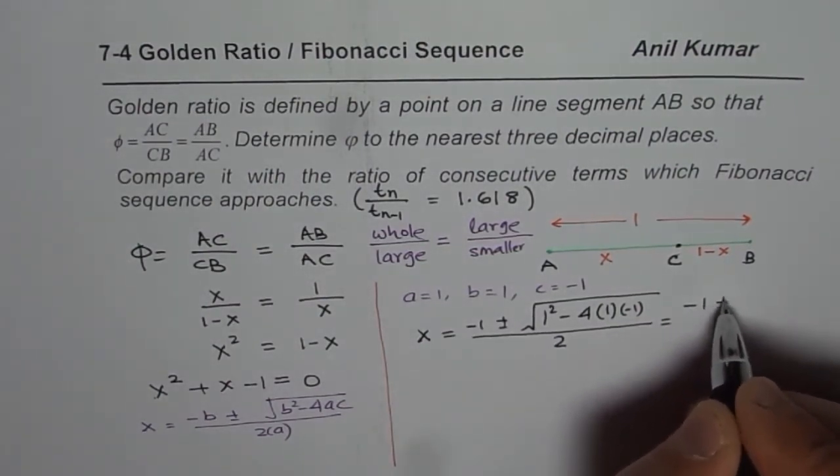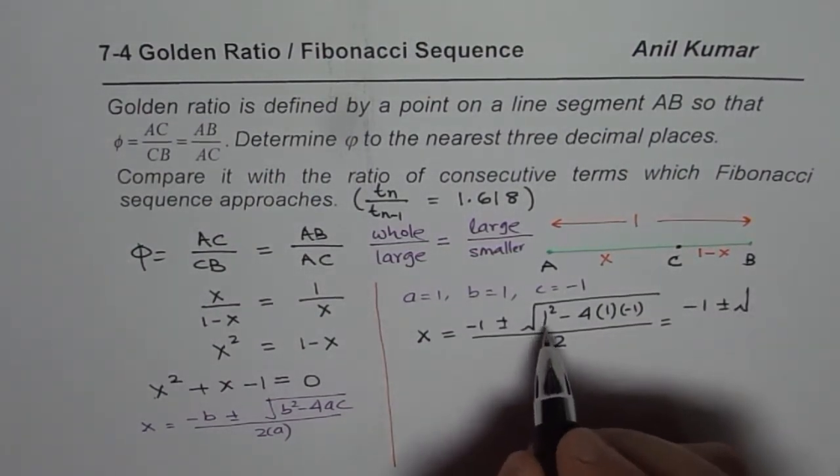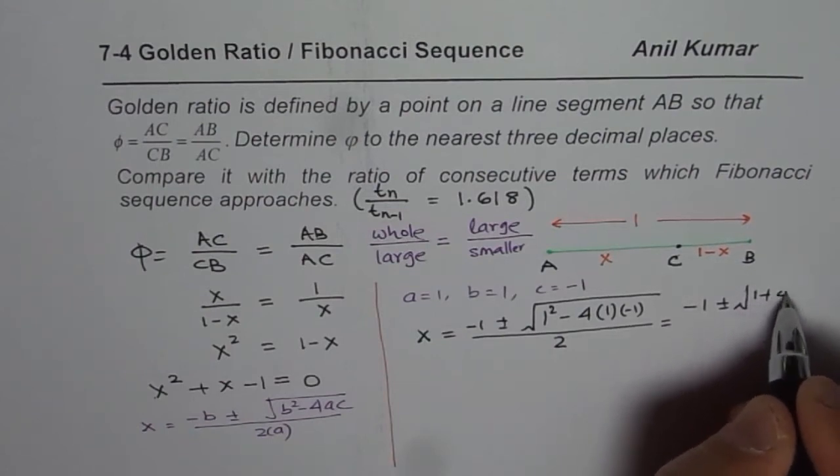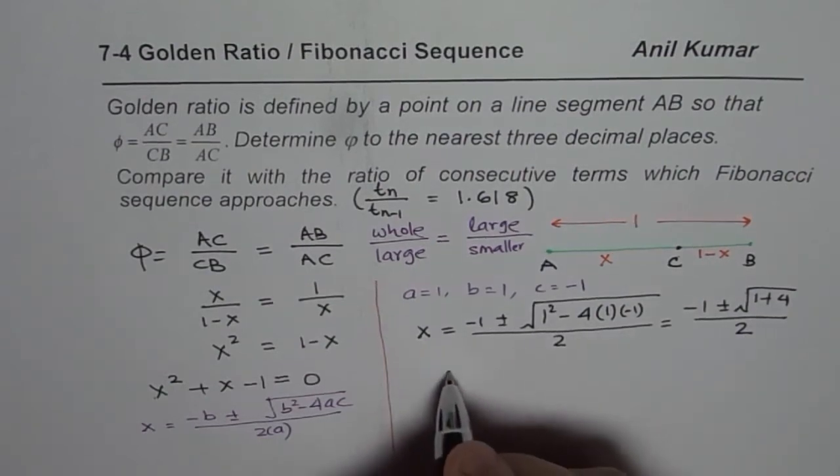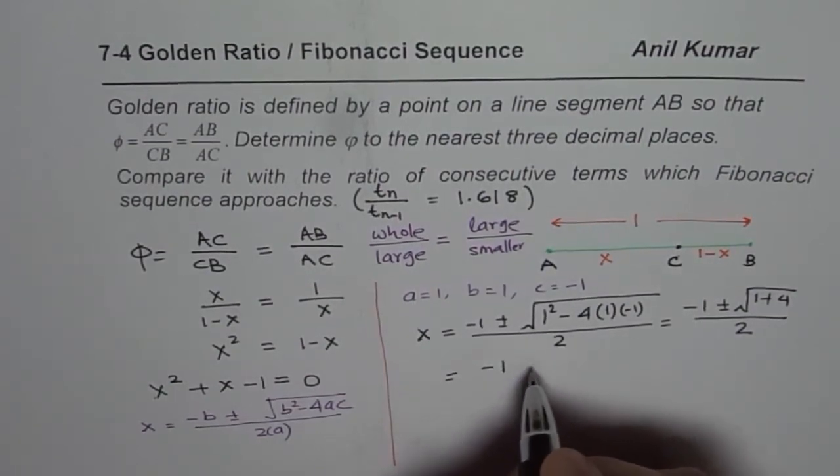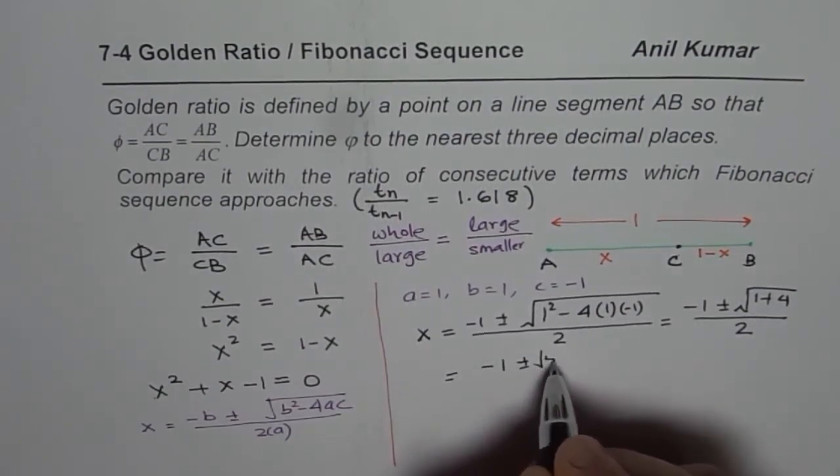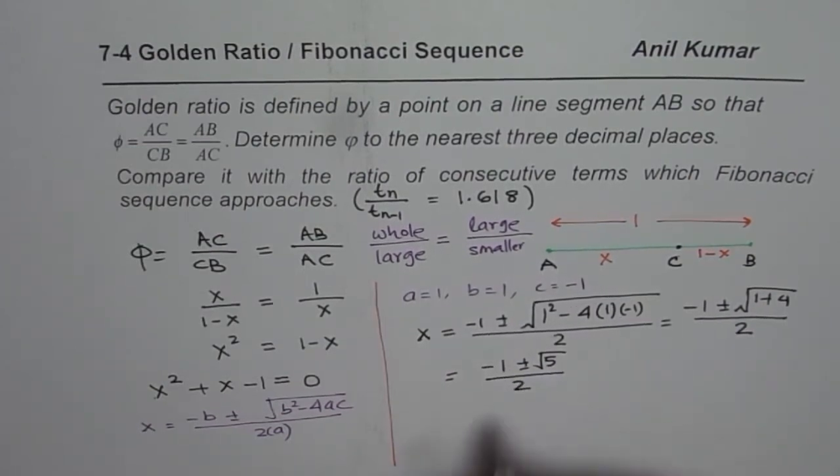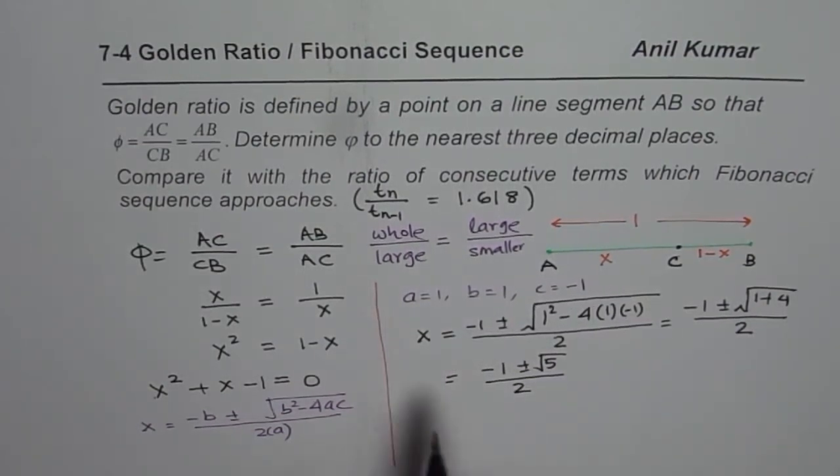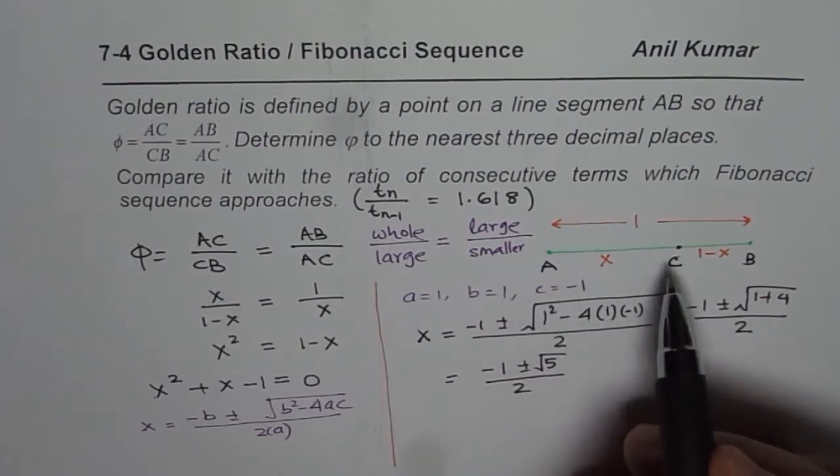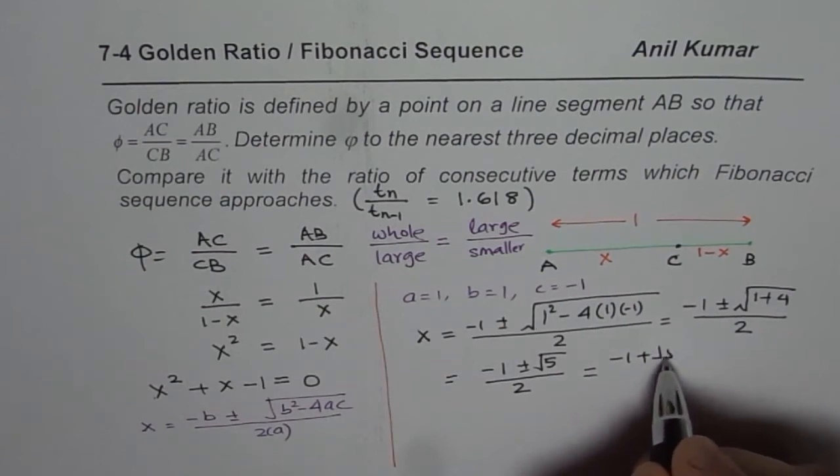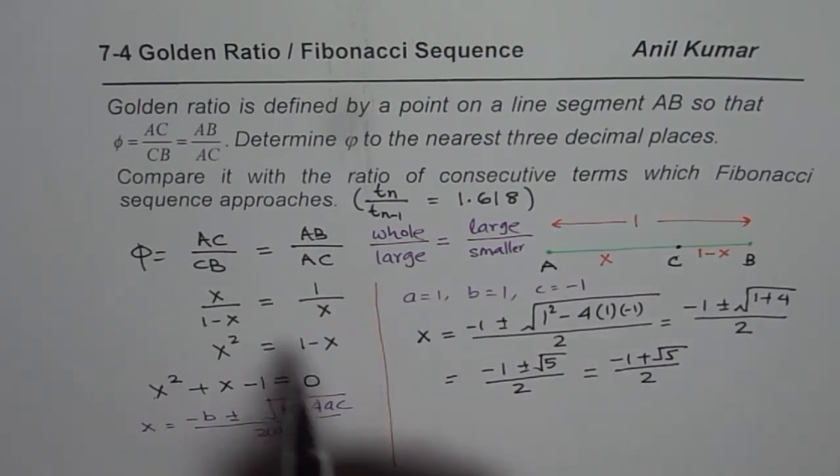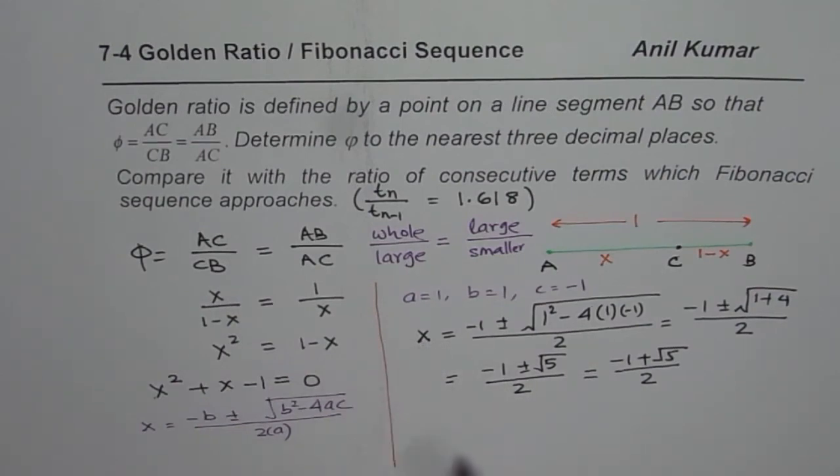So minus B means minus 1 plus minus square root of B squared minus 4 times AC. Now, C is minus 1, A is 1, divided by 2 times A, which is 2 times 1. So that gives you minus 1 plus minus square root of 1 plus 4, minus minus makes it plus, divide by 2. That gives you X as equals to minus 1 plus minus square root of 5, divide by 2. Now, since we are talking about the lengths, they are always positive. So we will take the positive value, which is minus 1 plus square root of 5, over 2. So that is the exact value of X.